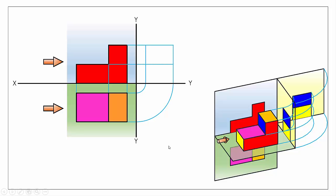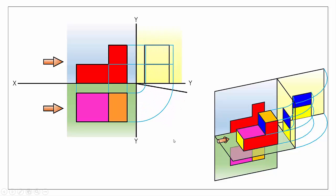This is what we mean by connected views — we don't have to re-measure these pieces. All heights are taken from our elevation, and all widths are transferred across from our plan view using the arc. The end view is therefore connected to both other views, and that's one of the great advantages of orthographic projection.